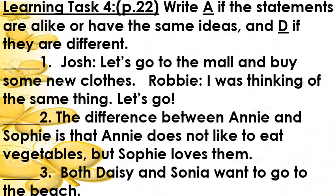Learning Task 4. Write A if the statements are alike or have the same ideas, and D if they are different. Number 1: Josh says, 'Let's go to the mall and buy some new clothes.' Robbie replies, 'I always think of the same thing. Let's go.' Number 2: The difference between Annie and Sophie is that Annie does not like to eat vegetables but Sophie loves them. Number 3: Both Daisy and Sonia want to go to the beach.